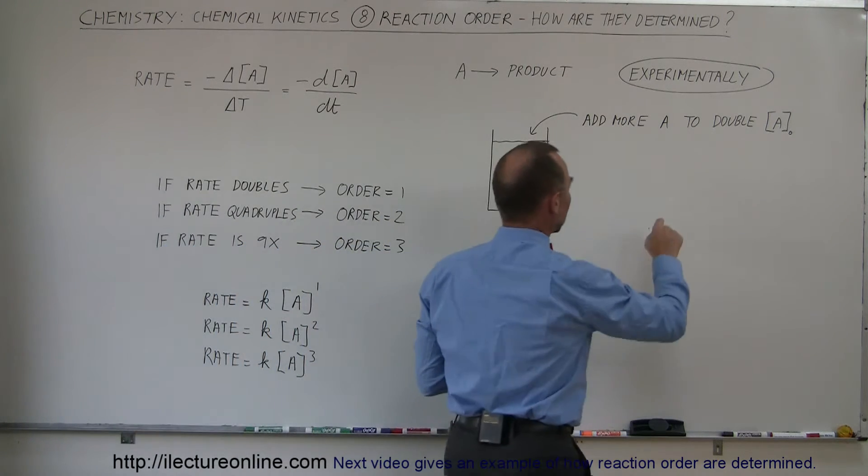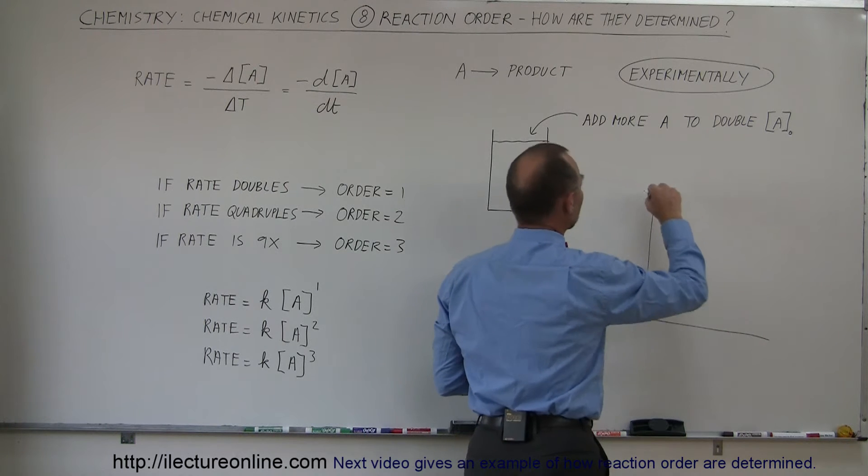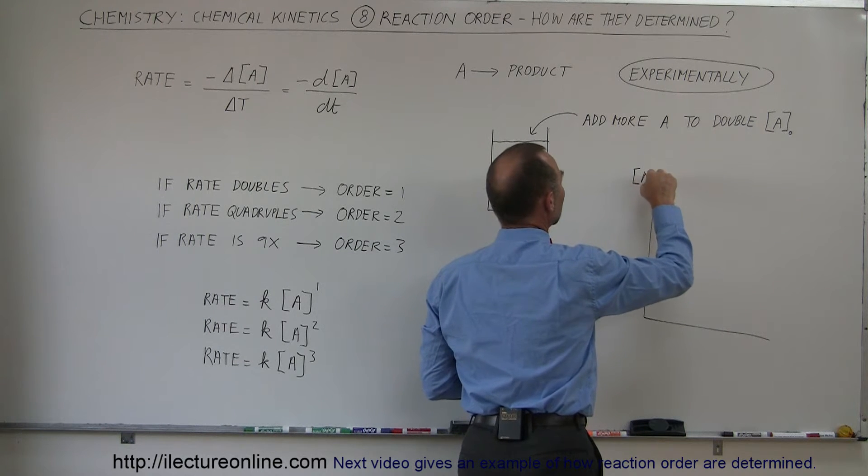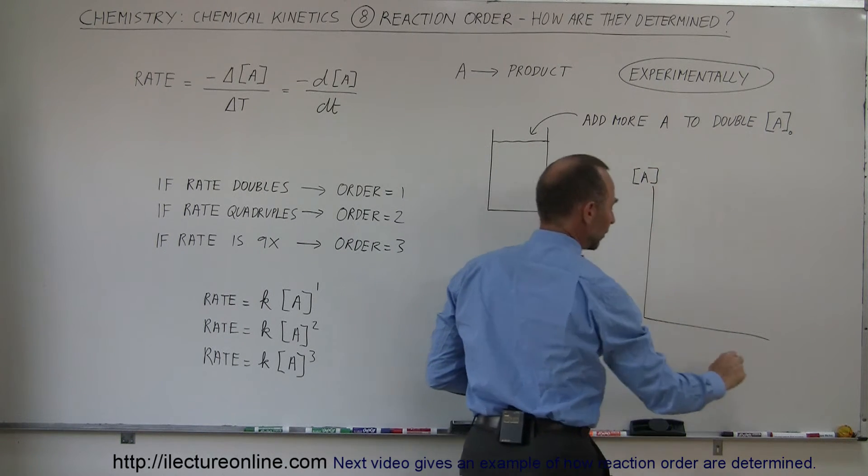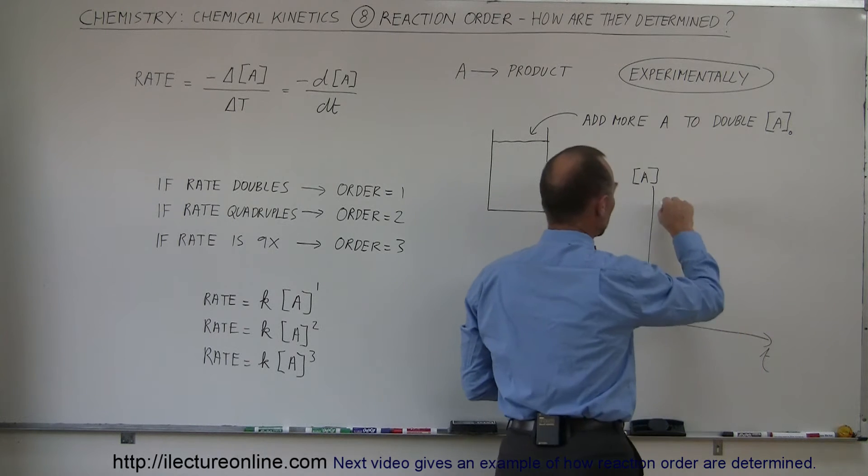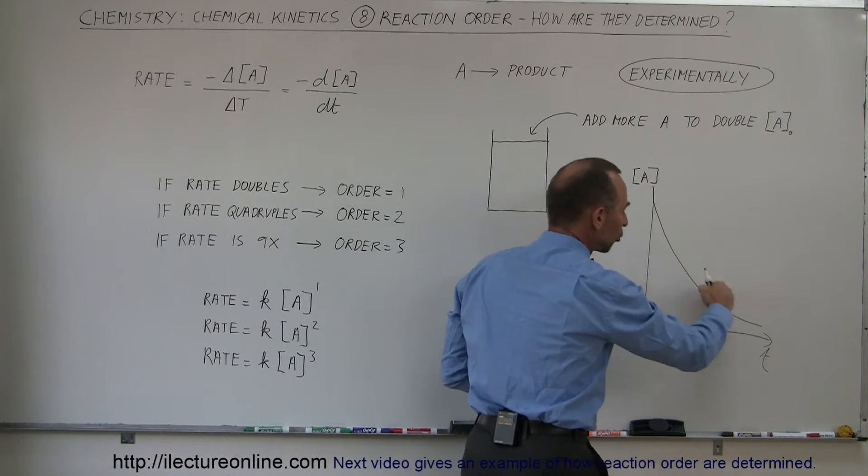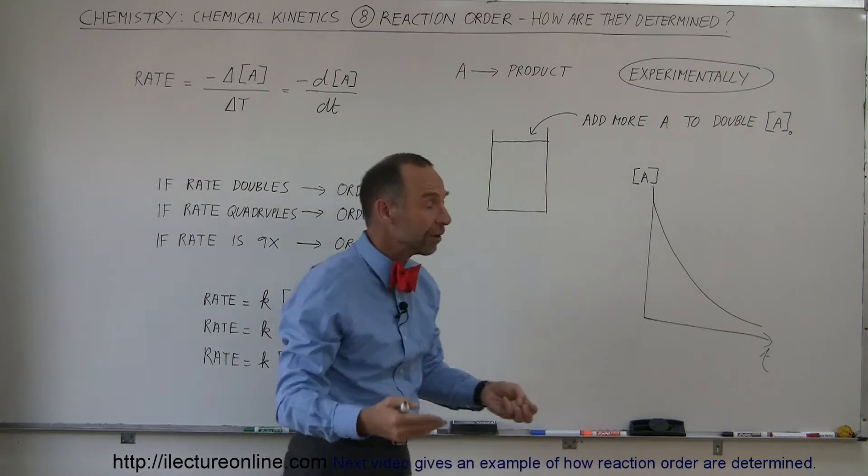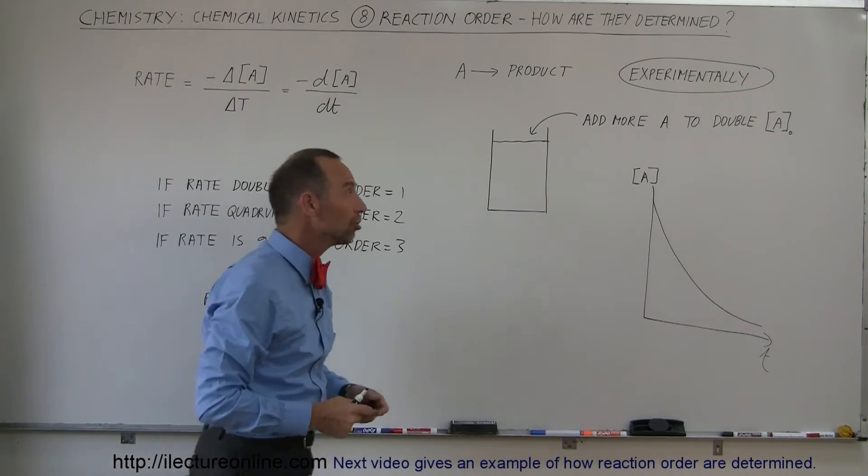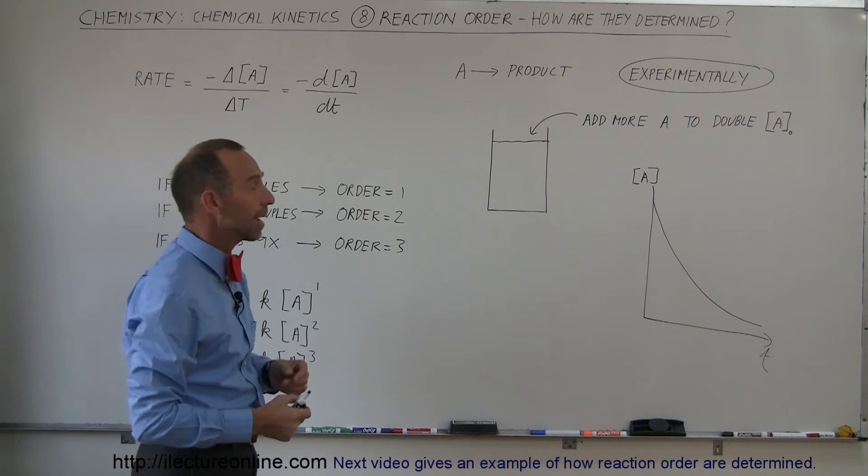Remember that when we look at a reaction rate, it's simply a relationship between the concentration of the reactant and the time elapsed. Usually that curve looks like this, and the rate is equal to the slope. It's simply the derivative of the relationship between concentration and time.